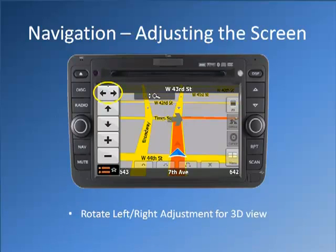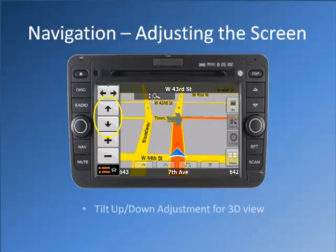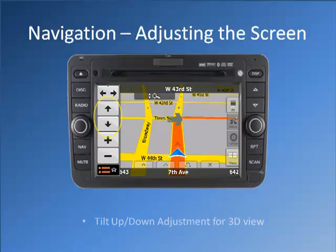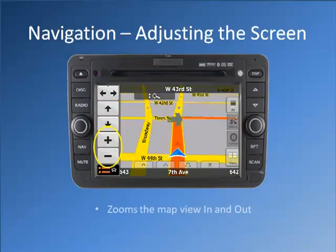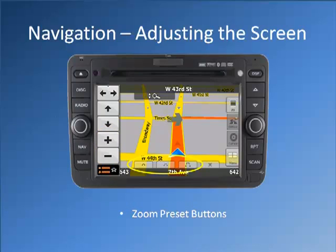Rotate left or right adjustment for 3D view. Tilt up or down adjustment for 3D view. Zooms the map view in and out. Zoom preset buttons.